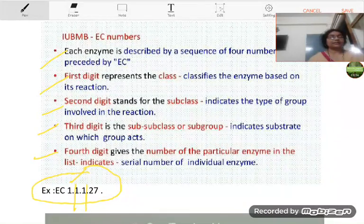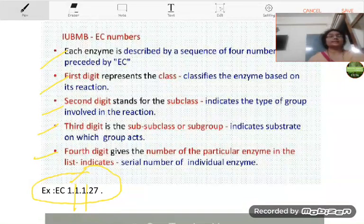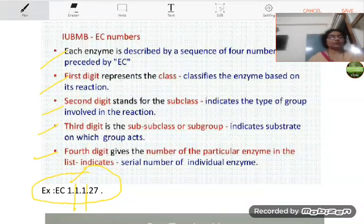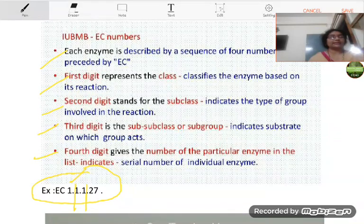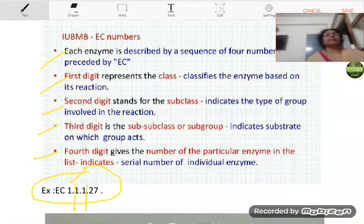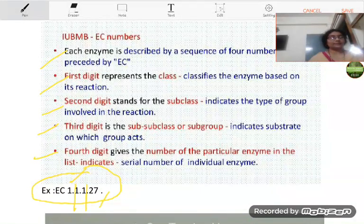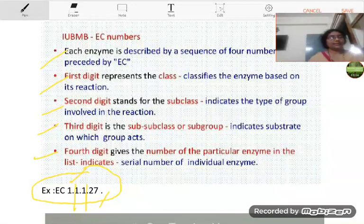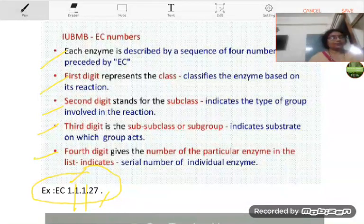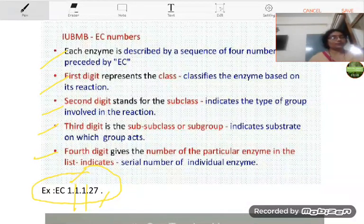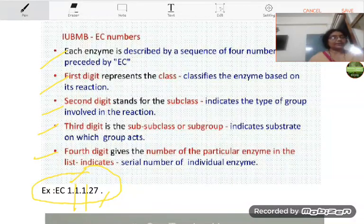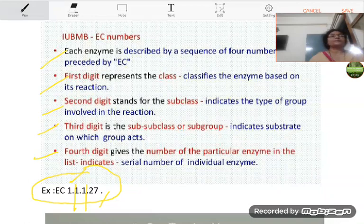The third digit shows or indicates it belongs to sub-subclass and uses NAD as acceptor. And the fourth digit is here 27. It indicates that the enzyme is in the list of 27 number of sub-subclass.